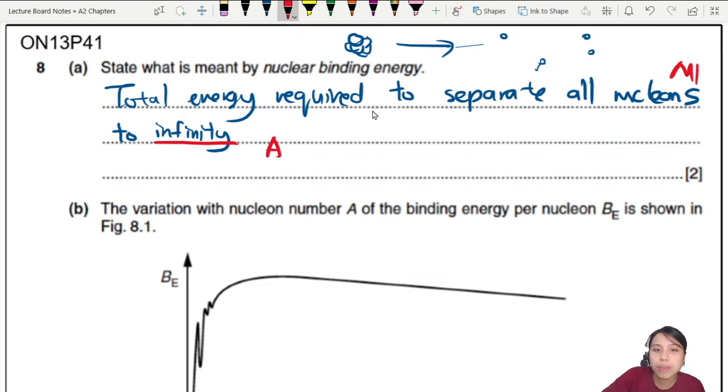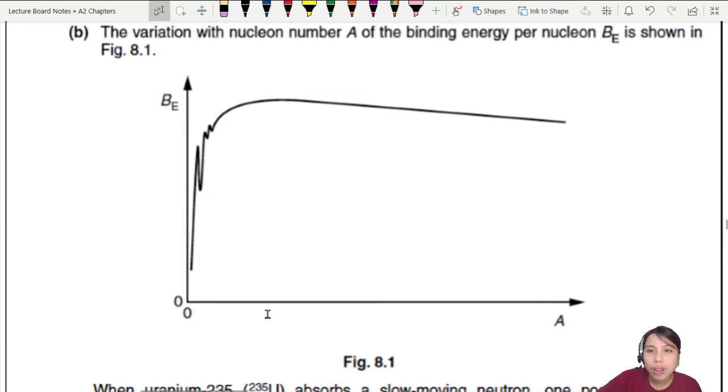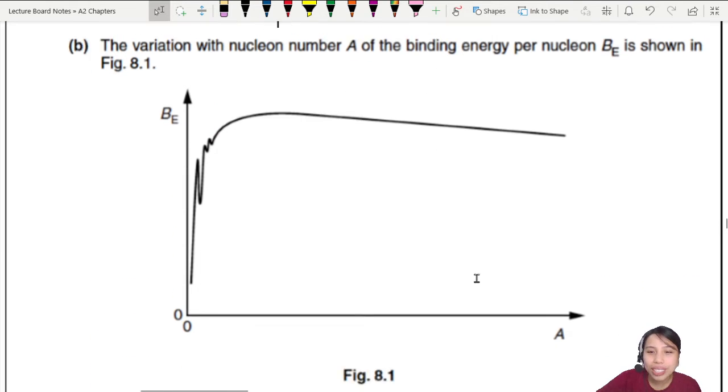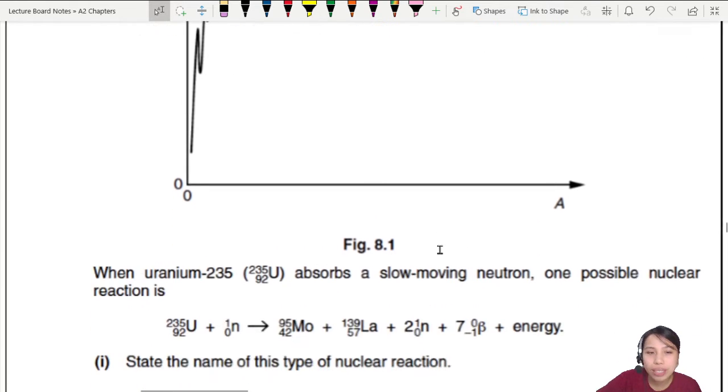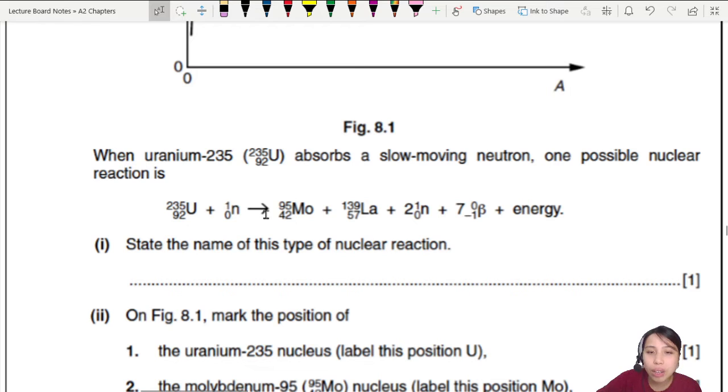The variation with nucleon number of the binding energy per nucleon - this binding energy graph is shown here. When uranium absorbs a slow-moving neutron, one possible reaction is this. Look at this long equation. It shows the full release of energy.